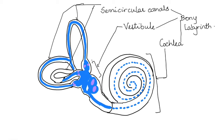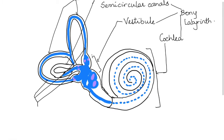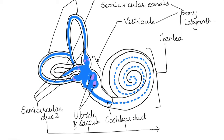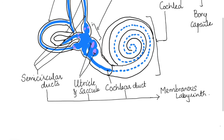Inside the bony labyrinth, shown here as a blue part, is a tube-like system filled with fluid. The blue part inside the semicircular canal is called the semicircular ducts. The sac-like structures inside the vestibule that also contain fluid are called the utricle and the saccule. Inside the cochlea is the fluid-filled cochlear duct. So the semicircular ducts, the utricle and saccule, and the cochlear duct together form the membranous labyrinth.